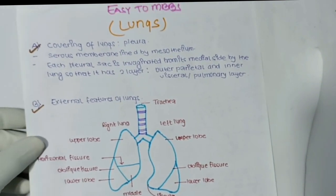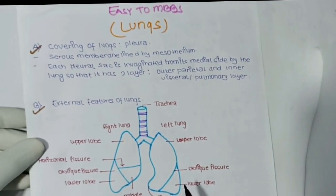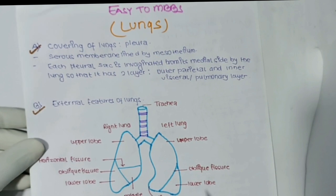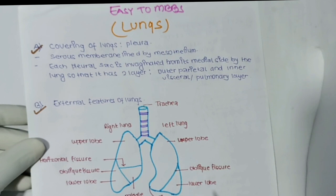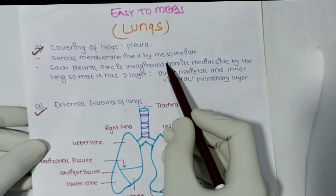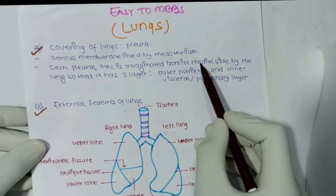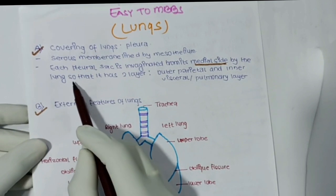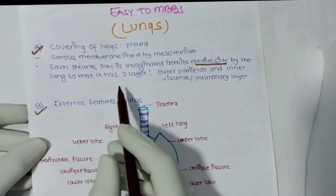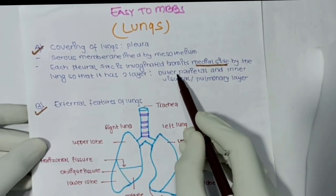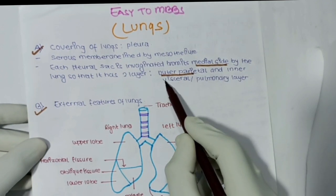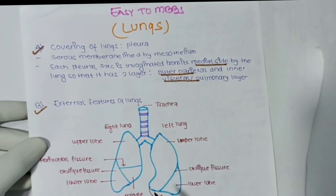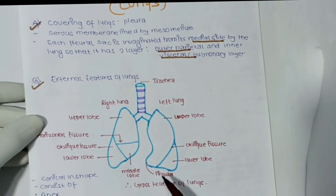The covering of lungs is known as pleura — a serous membrane lined by mesothelium. The pleural sac is imaginated from its medial side by the lungs, so it has two layers: the outer layer is known as the parietal layer and the inner layer is known as the visceral or pulmonary layer.